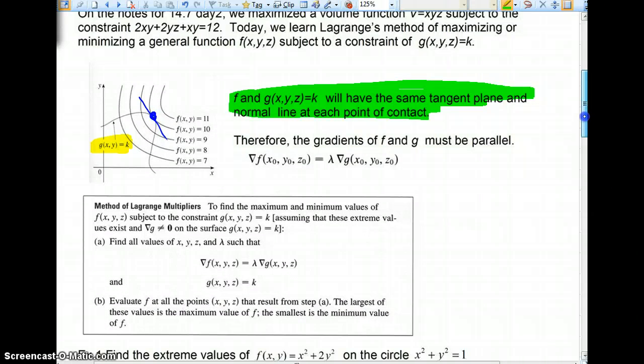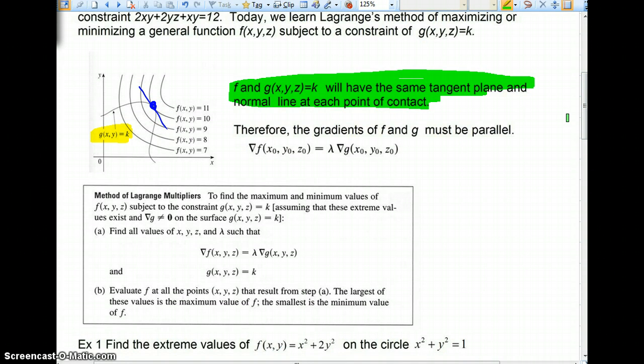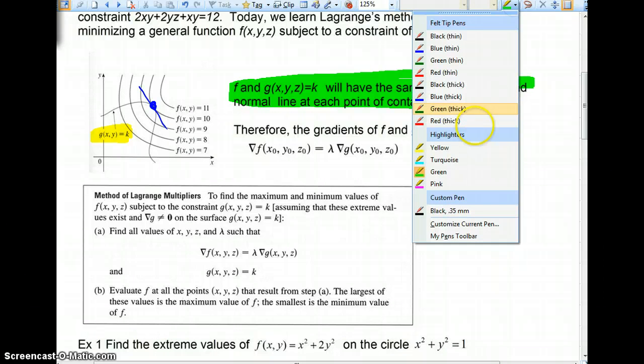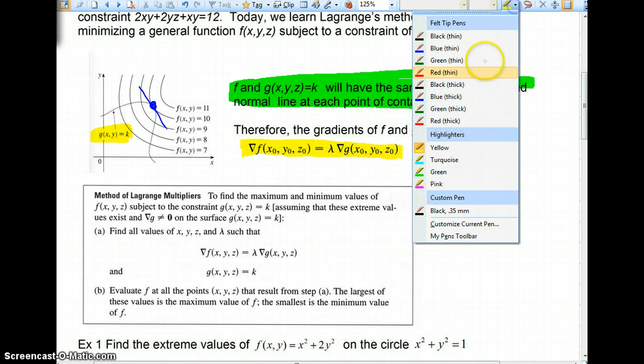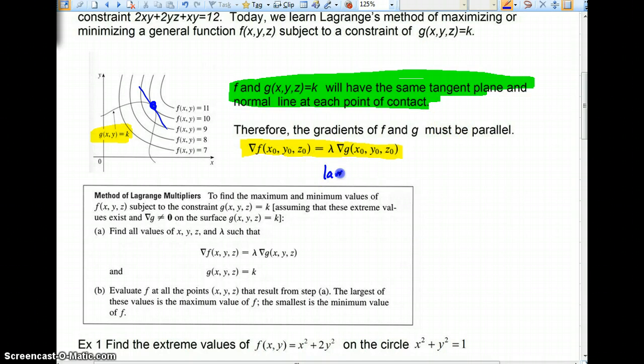We're going to assume that they would have the same tangent plane and normal line at each point of contact. So what we do is if the tangent planes are going to be the same, then the gradients, vectors that are perpendicular to the plane, must be parallel. Remember back in chapter 12, parallel vectors just mean that they are scalar multiples of one another. There is some constant multiplied to one vector that would be equivalent to the second vector. This constant that we're going to assume that we have is the Greek letter lambda.